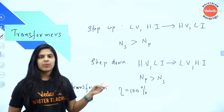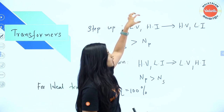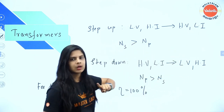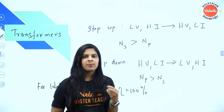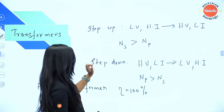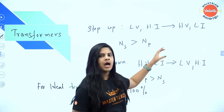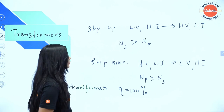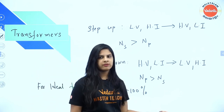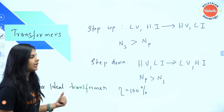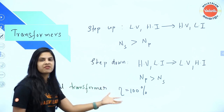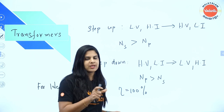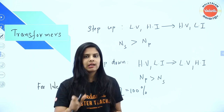A step-down transformer converts high voltage low current to low voltage high current. The secondary coil has fewer turns. For an ideal transformer, efficiency is 100%, meaning input power equals output power.